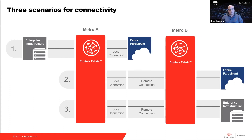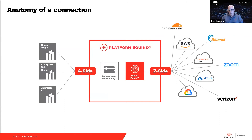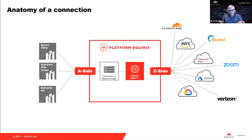All scenarios share the same basic anatomy: there's an A side and a Z side. A-side connections come in — either co-location or Network Edge connected to the fabric — and Z-side connections go out. The A side is consuming the service; the Z side is producing or providing the service. That's the basic anatomy: coming in one side, going out the other.